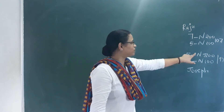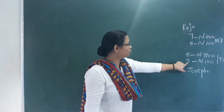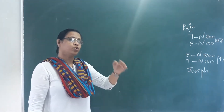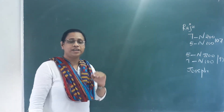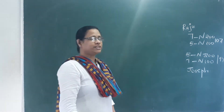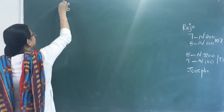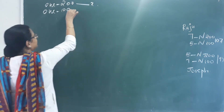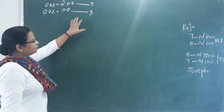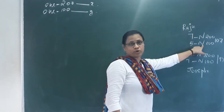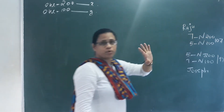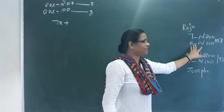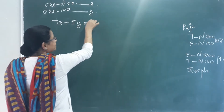Joseph bought five notebooks of 200 pages and seven of 100 pages for 97 rupees. What is the price of each kind of notebook? Let the price of a 200-page notebook be x and the price of a 100-page notebook be y. So we form the equation: 7x plus 5y equals 107.